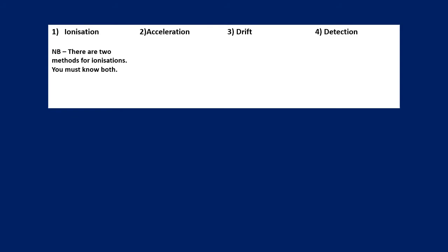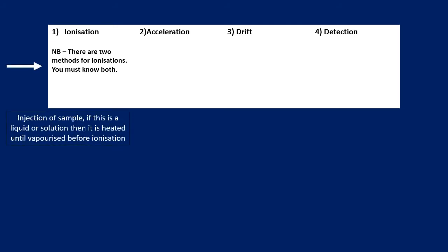There are four main stages in the mass spectrometer and we need to know information about each of them. It's worth pointing out that when the sample is injected it is usually dissolved in solution or is a liquid, but it is heated until it's vaporized — it must be vaporized before anything else happens. Then these four stages occur in order: ionization, followed by acceleration, then drift or flight, and finally detection.